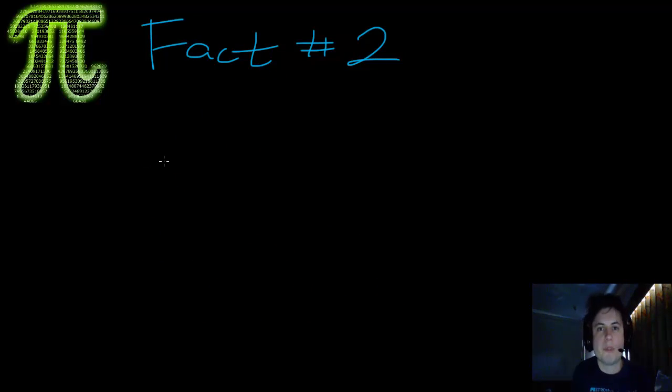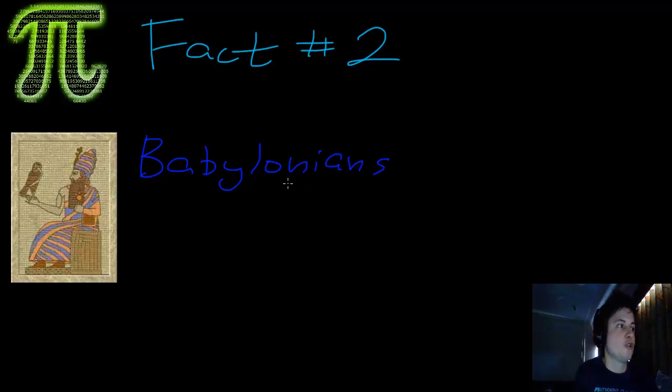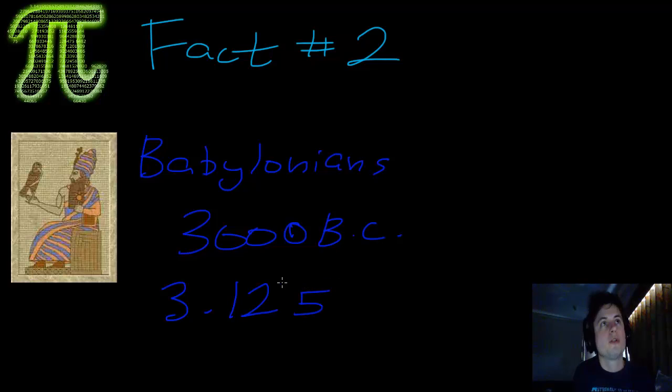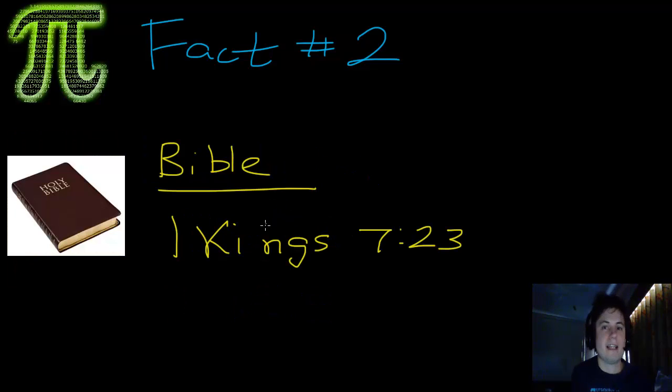Pi fact number two. Fact number two is that the concept of Pi is actually really old. It goes back to Babylonians, people living around 3000 BC, way before Greeks. They estimated the value of Pi to approximately 3.125, which is relatively close to what we know today. The other really cool thing is that Pi is actually mentioned in the Bible. In 1 Kings 7 verse 23, there's actually a verse about how to calculate Pi and it's also pretty accurate.